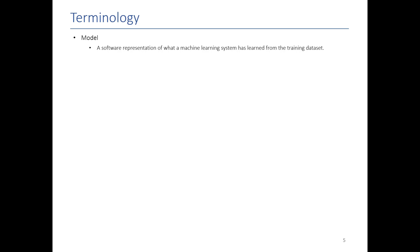Now let's go over some basic machine learning terminology. The first term is a model — you can think of a model as a software representation of what a machine learning system has learned. In your mind you already have lots of mental models: for example, writing a sentence — you know the first word has to be capitalized, the last thing has to be punctuation, and in the middle there's a subject and a predicate. The computer develops a similar set of rules on how to perform a task, and those rules are what we call the model. A feature can be thought of as a column in our data.